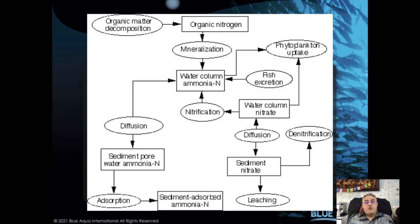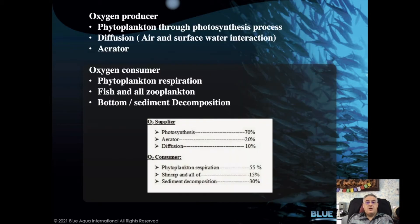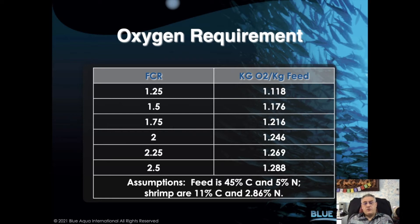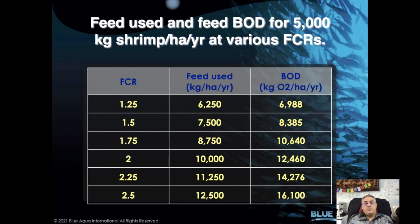Oxygen is one of the key factors — really the first factor to improve carrying capacity. Oxygen is involved in many activities inside the pond, from oxidation to production and consumption by phytoplankton and bacteria. Most living organisms inside the pond consume oxygen, and oxidization is very important. Ammonia and hydrogen sulfide are all affected by the oxygen level. Oxygen requirement goes by the FCR: a higher FCR means a higher oxygen requirement.